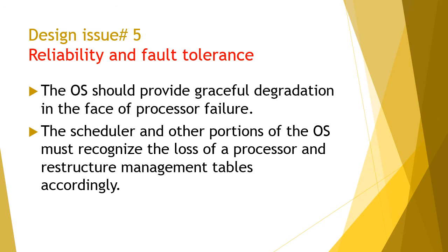For reliability and fault tolerance, the operating system should provide graceful degradation in the face of processor failure. Graceful degradation is the condition in which failure of one or more system modules occurs but the system does not shut down — instead it keeps running with degraded performance. This is the opposite of a system with a single point of failure, which goes down instantly. The scheduler and other portions of the OS must recognize the loss of a processor, identify the processes that were scheduled on the failed processor, and reschedule them on the remaining processors.